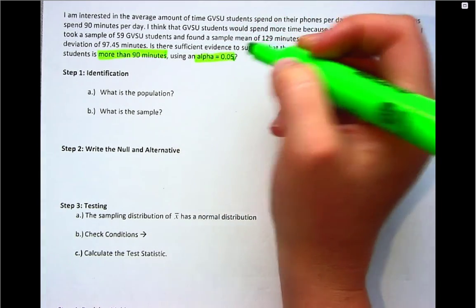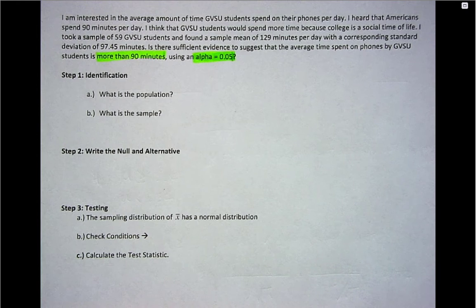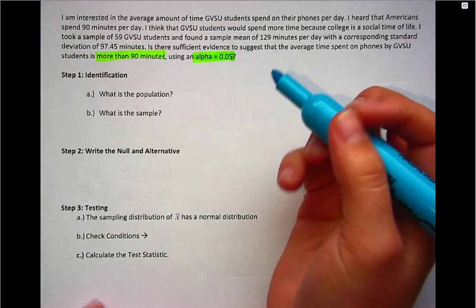So that's what I want to be able to show. I'm going to do the test using an alpha of 0.05. That helps me to know how to do the test, what I'm looking for, and how to make my decision in step four.